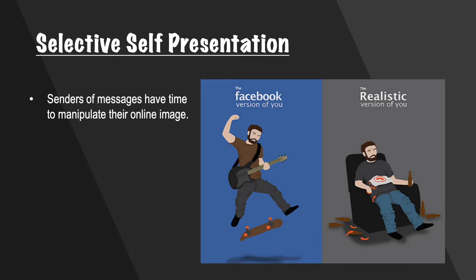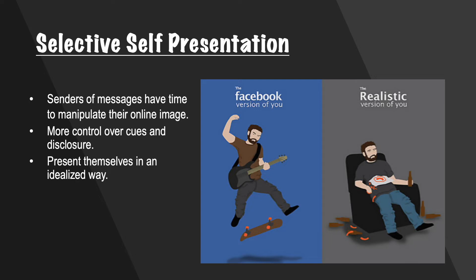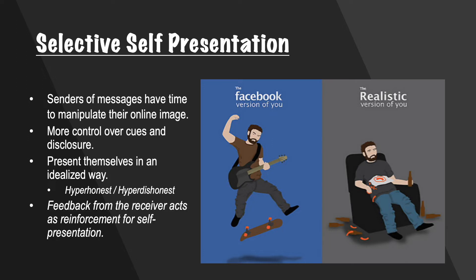This is known as selective self-presentation, meaning the sender can manipulate their self-image to present themselves in a very idealized way. To do this effectively, self-disclosure can be both intensely truthful and/or intensely false — known as hyper-honesty or hyper-dishonesty. The sender often then receives positive feedback on what they've disclosed, which reinforces the self-presentation chosen and encourages them to continue.